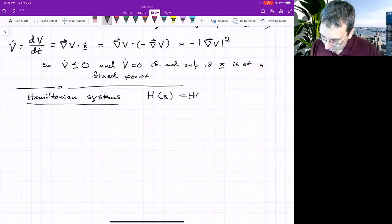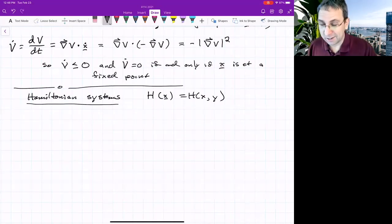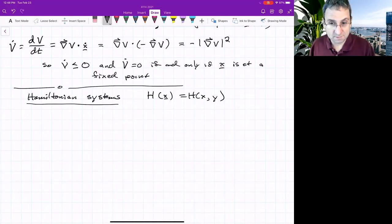So this scalar function h, maybe it's easier if we just write it as scalar function of x and y. So again, think of a height function, but we're not going to just take the gradient. We'll do something else.